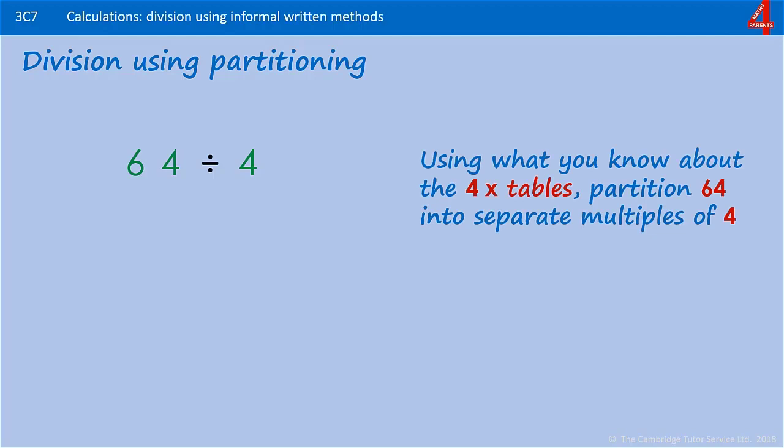Using what you do know about the four times table, we're going to start by looking at sixty-four and thinking what's the highest multiple of four I can think of that will go into sixty-four. At this stage when you're doing these, a good tip is to look for multiples of ten.